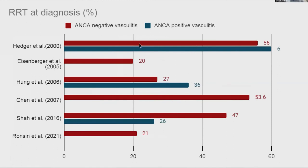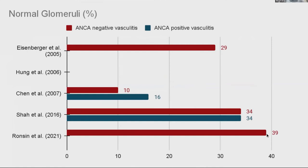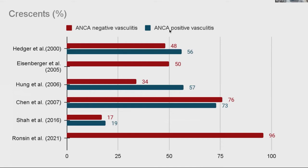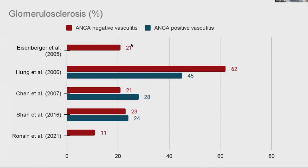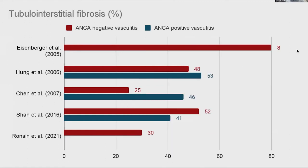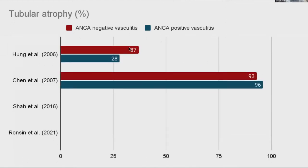Most studies showed that at least 20 to 40% needed dialysis on admission; in the first study, up to 56% of ANCA-negative patients needed dialysis on presentation. Histologically, 29 to 39% had normal glomeruli, and 40 to 70% had crescents on examination — in the largest French study up to 96% had crescents. Up to 20% had global glomerulosclerosis, though the Taiwanese cohort had 62%. Up to 50 to 80% had tubular interstitial fibrosis, and tubular atrophy ranged from 37% (Taiwan) to 93% (China).